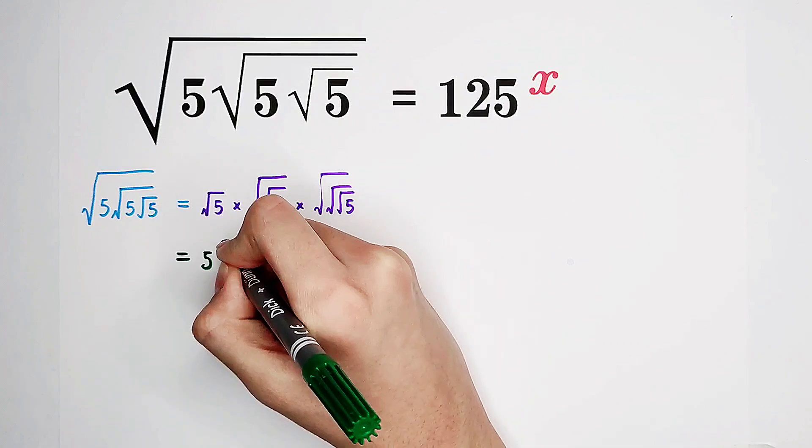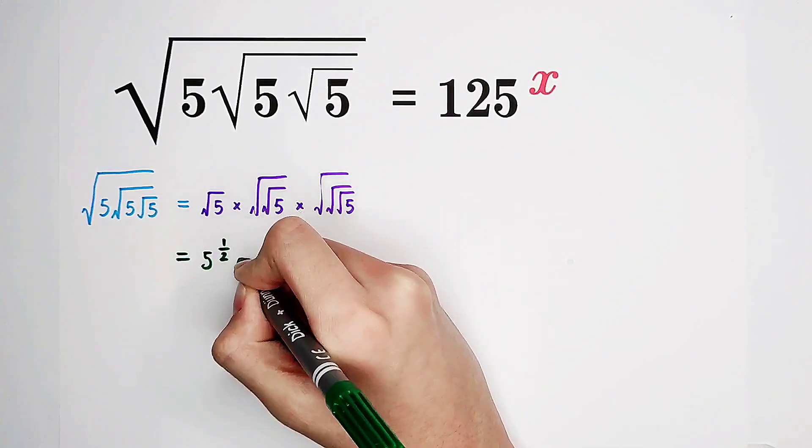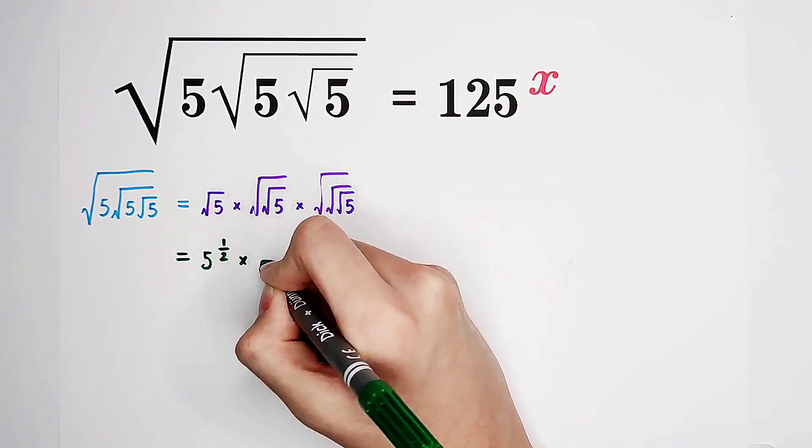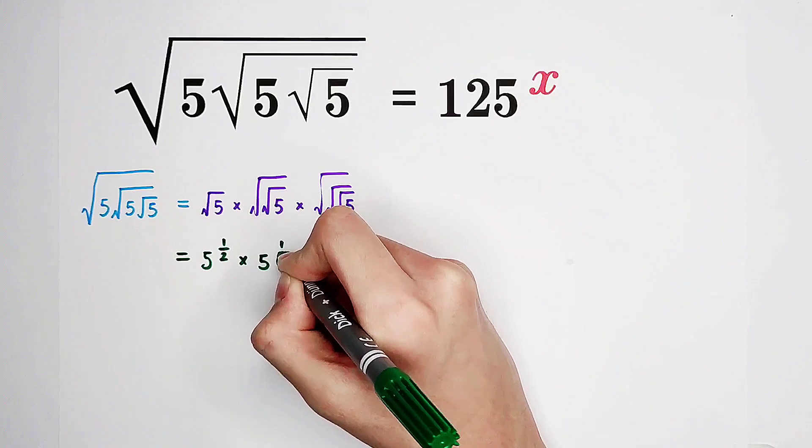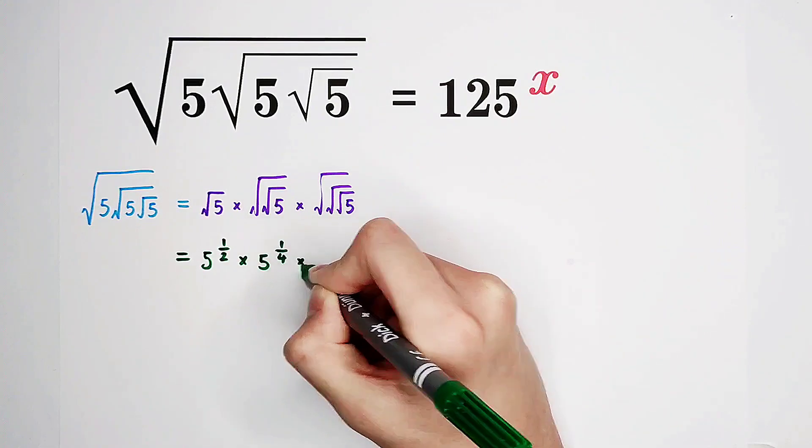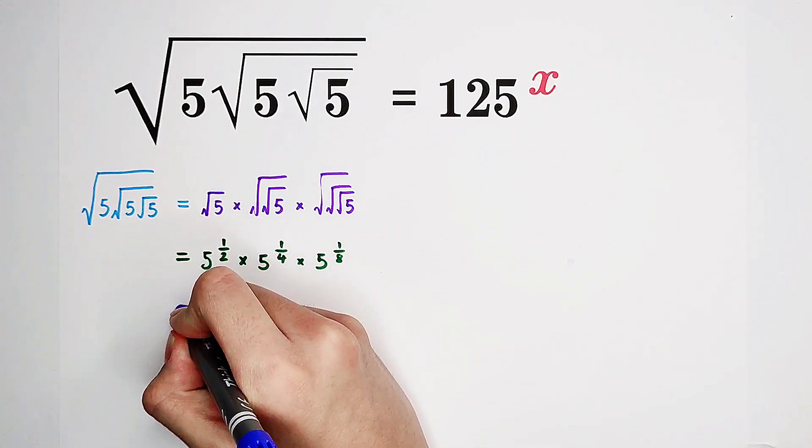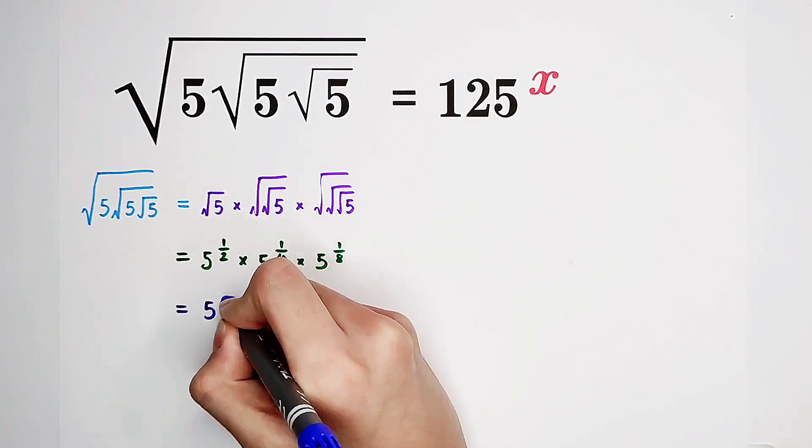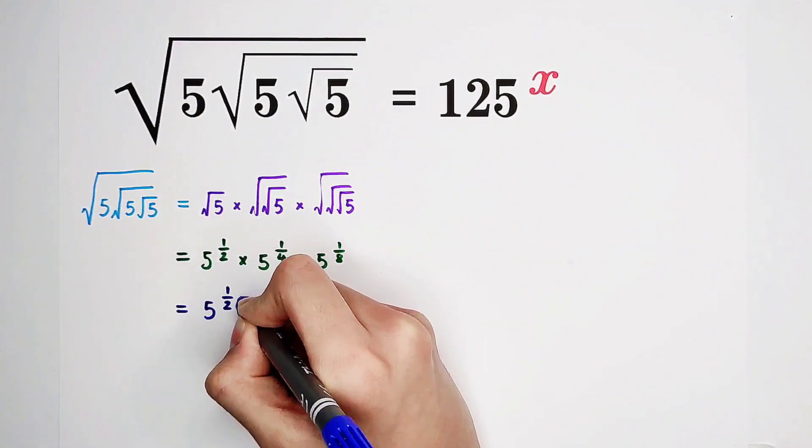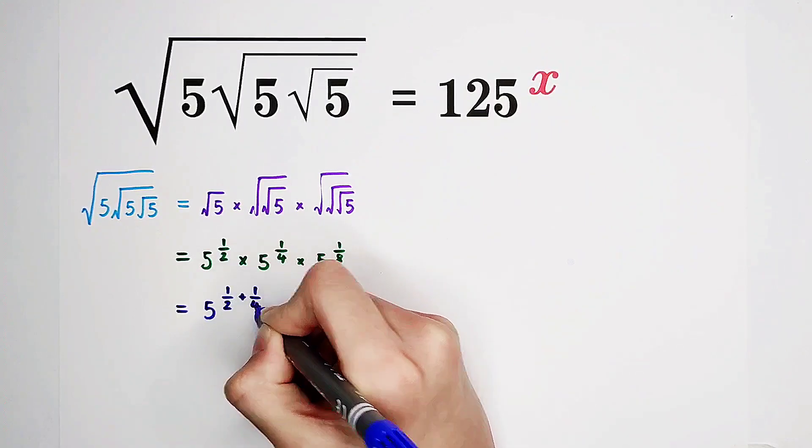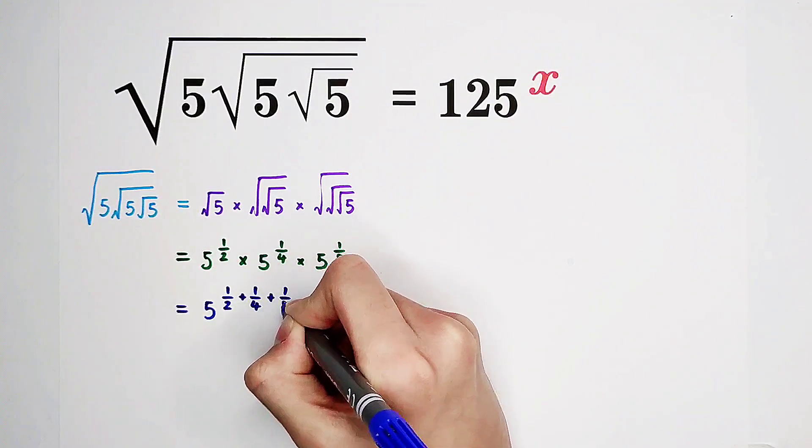This guy is just 5 to the power of 1 over 2, then times this guy which is 5 to the power of 1 over 4, and this guy is 5 to the power of 1 over 8. Now it is just 5 to the power of 1 over 2 plus 1 over 4 plus 1 over 8.